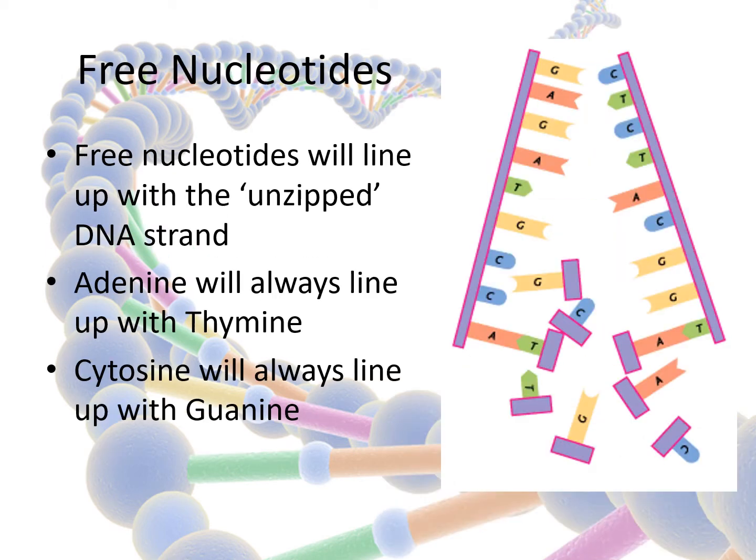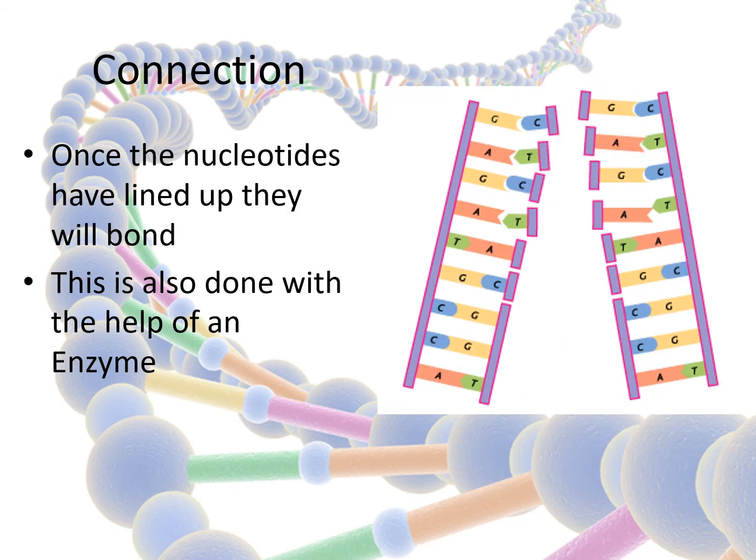Once the DNA has unzipped, free nucleotides will line up with their partners along the strands of DNA. Adenine will always line up with thymine and cytosine will always line up with guanine. Once the nucleotides have lined up, they will bond. This is also done with the help of an enzyme.